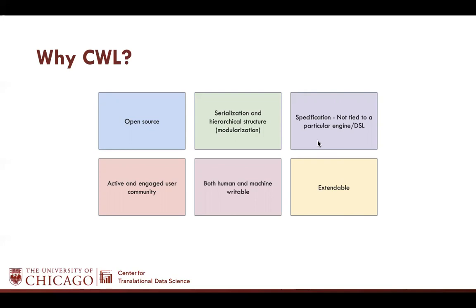Also, in the future, if you want to have some new features, you can add them in your own workflow engine and still run your CWL workflows. CWL is also extendable. As I mentioned, if you have your own workflow engine — just like Seven Bridges — what they did is add some hints in the CWL so that the engine can recognize and select the AWS instance flavors.